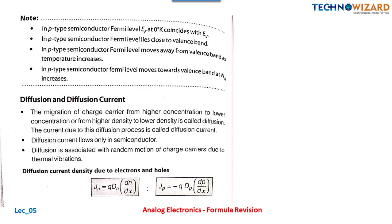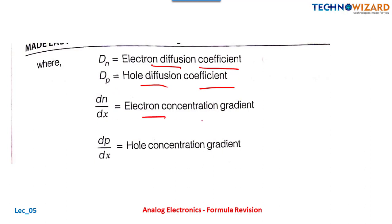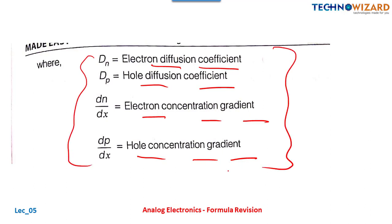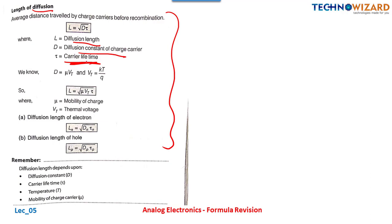Diffusion current: the diffusion current density for electrons is Jn = q·Dn·(dn/dx), and for holes it is Jp = −q·Dp·(dp/dx), where Dn is the electron diffusion coefficient, Dp is the hole diffusion coefficient, dn/dx is the electron concentration gradient, and dp/dx is the hole concentration gradient. The diffusion length L = √(D·τ), where D is the diffusion constant and τ is the carrier lifetime.